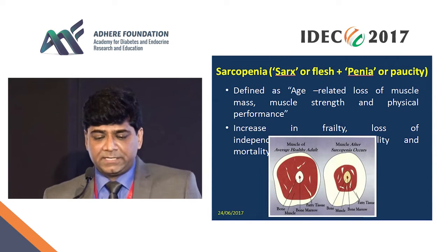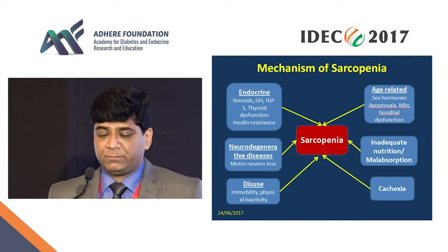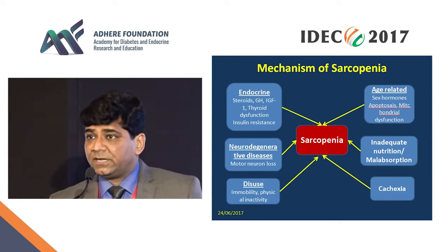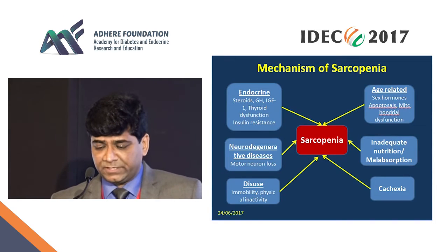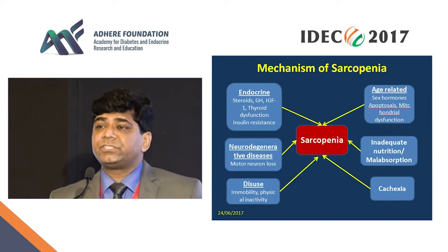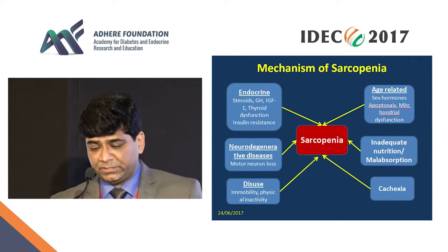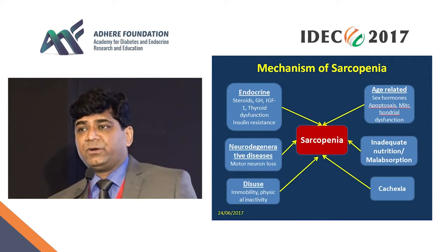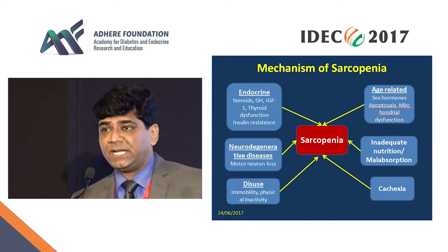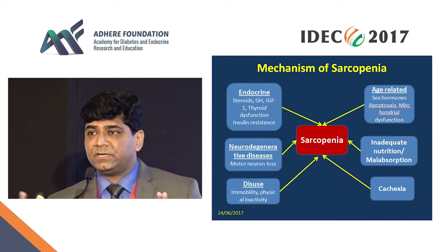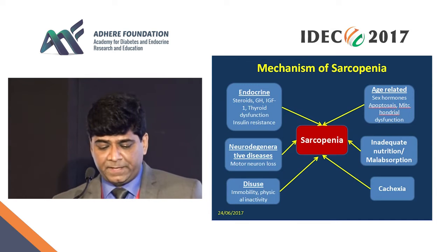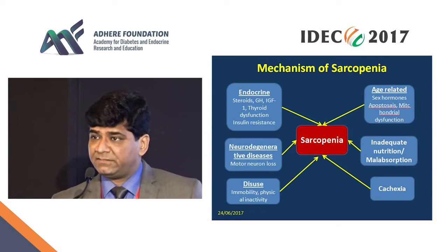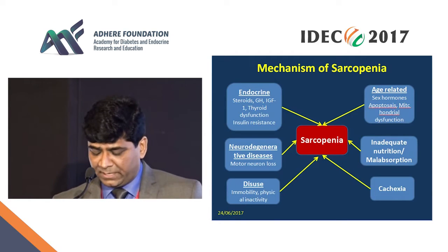The mechanisms of sarcopenia include endocrine and biological abnormalities, changes in sex hormones, and mitochondrial dysfunction. Inadequate nutrition and malabsorption are also important mechanisms. Neurodegenerative disorders can cause damage to the neuromuscular junction, leading to muscle atrophy. Additionally, decreased use, immobility, and physical inactivity also lead to decrease in muscle mass.